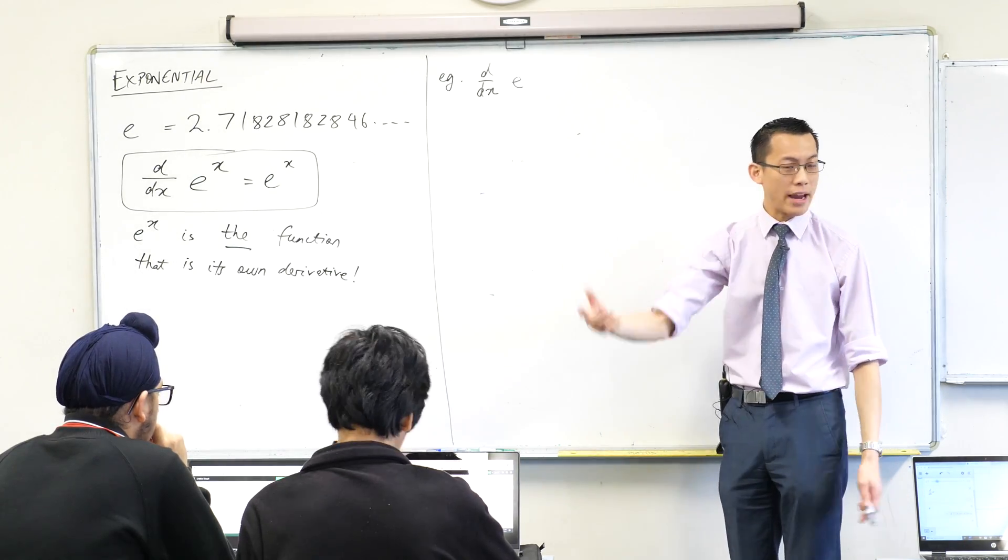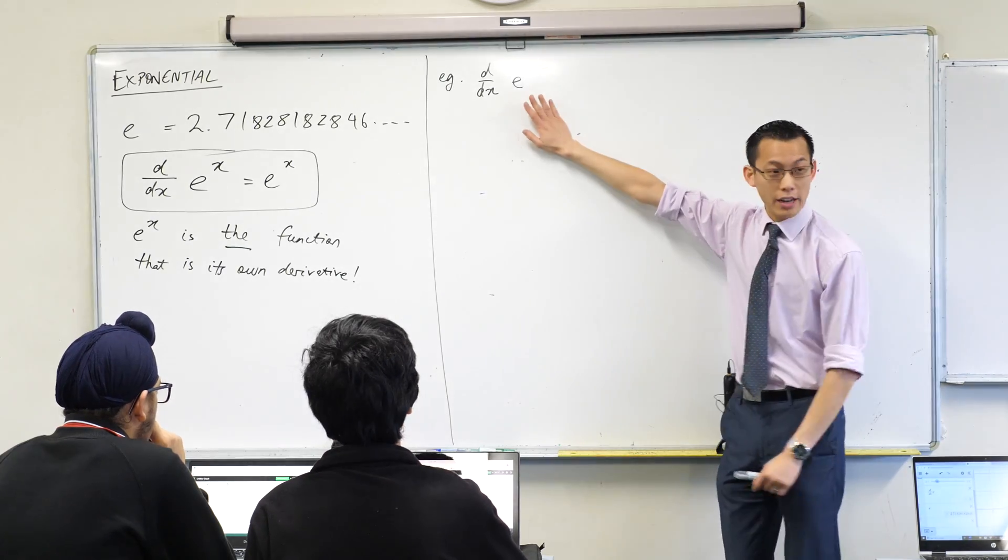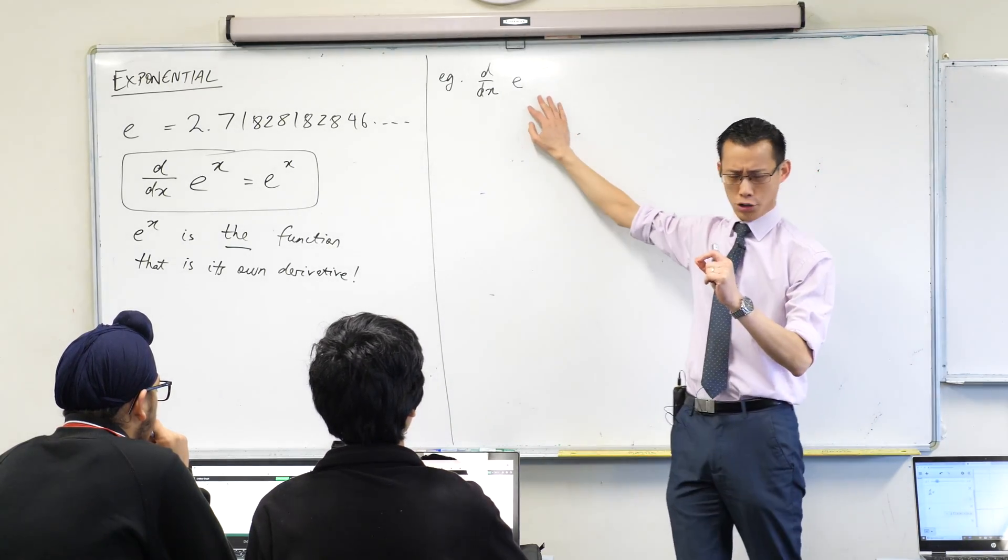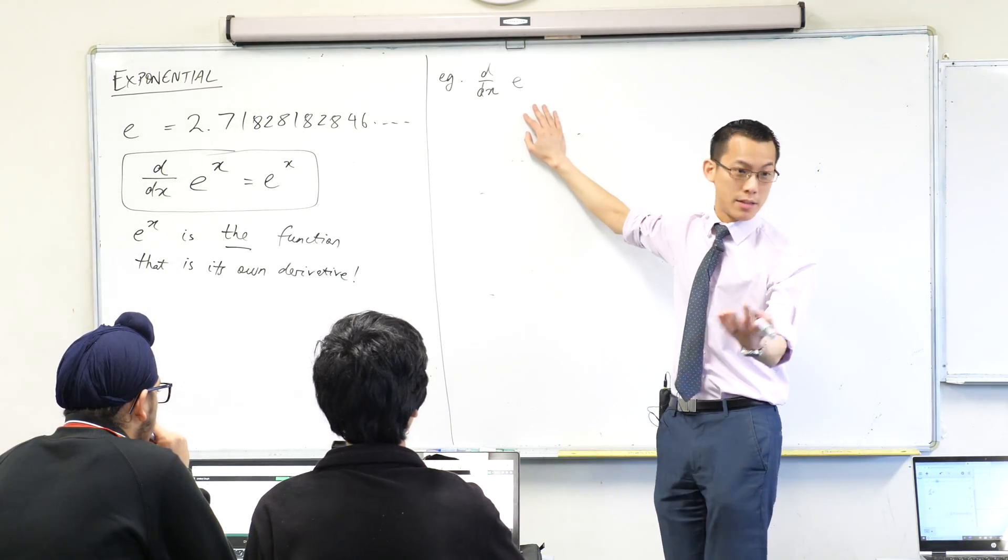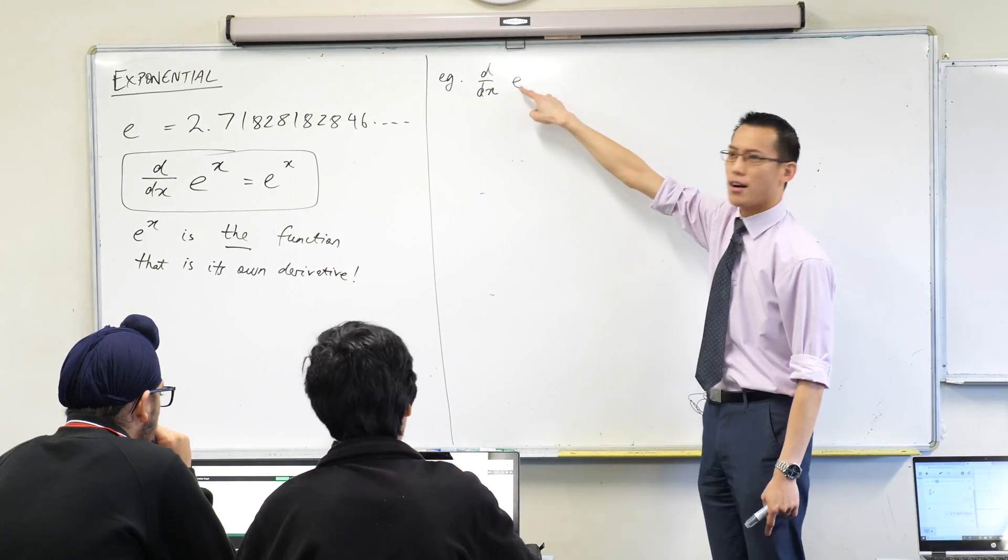We call this the chain rule. In fact, you may or may not recall one of the longer names. It's a bit awkward, it's why we don't tend to use it. One of the longer names for the chain rule is the function of a function rule. Sometimes the textbook will call it this. There's a function and this is a function of a function.